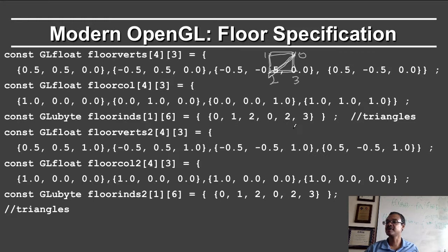I also specify the coordinates for my second plane with the same vertices, except that the Z coordinate is now equal to 1. If you look here, the Z coordinates are all 1. The colors are also different in this case, in that all of the colors are red. However, the indices are exactly the same as what we had earlier, in order to specify the triangles for the second plane, which is above the first plane.